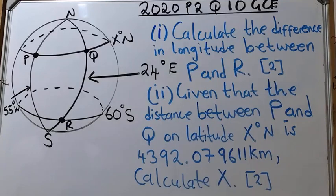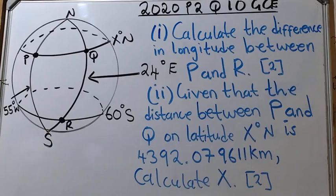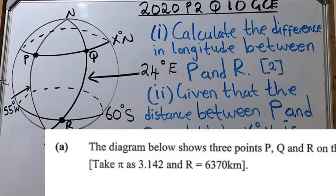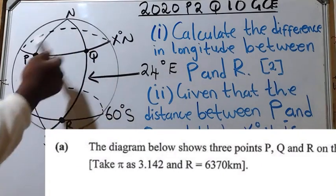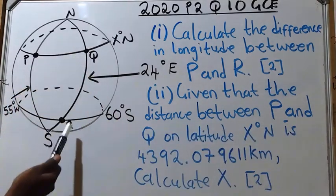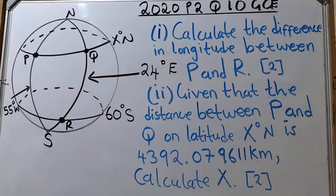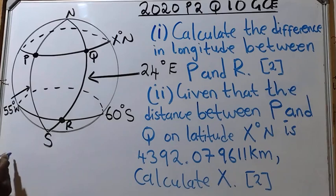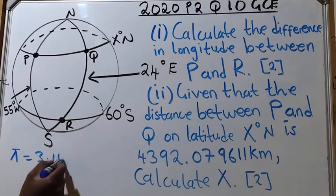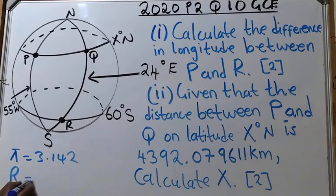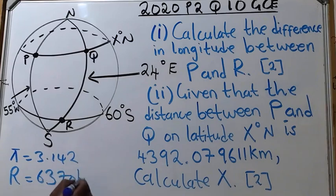This question is coming from Earth Geometry. The question reads: the diagram below shows three points P, Q, and R on the surface of the Earth. Take pi to be 3.142 and the radius of the Earth to be 6,370 kilometers.